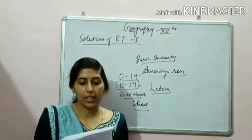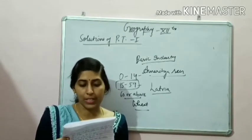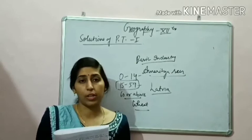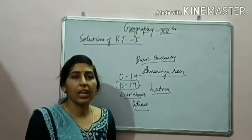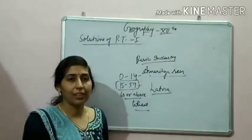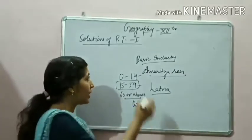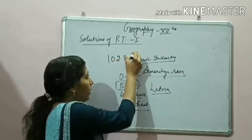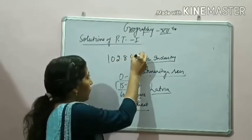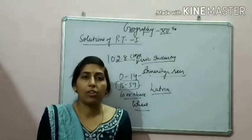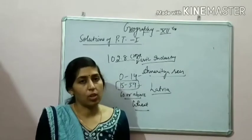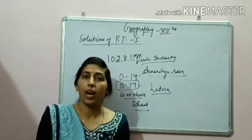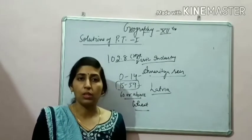The next question is: in the 2001 census, what was the population of India? The answer is 102.8 crore. That was the population of India according to the census of 2001.